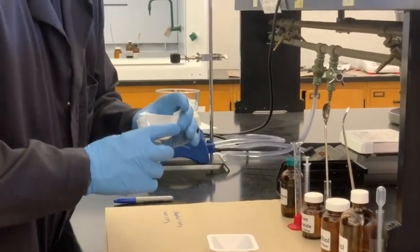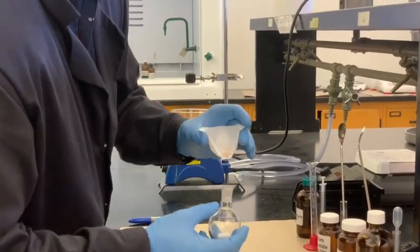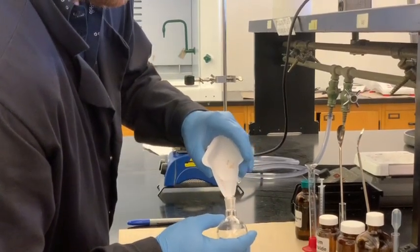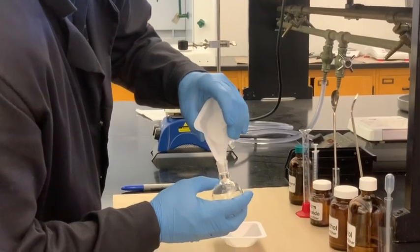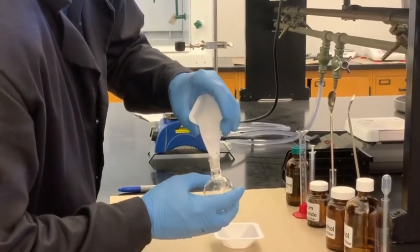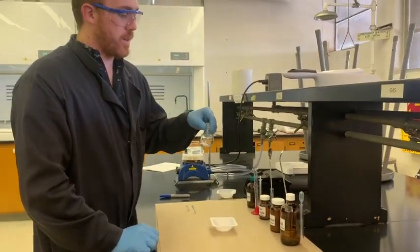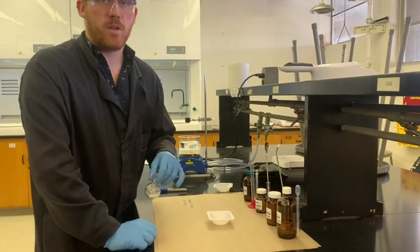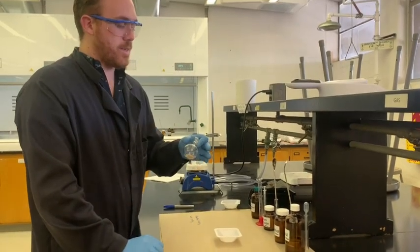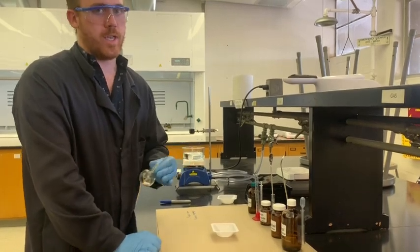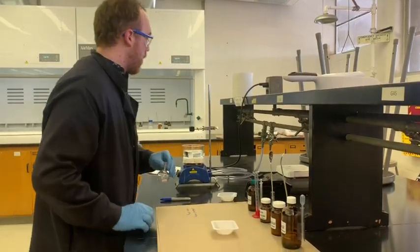So this is just 2-naphthol, it's got a couple of colored impurities in it. Want to get as much of it as you possibly can. We're not going to actually add the sodium hydroxide yet, just because it's not necessary. You want this 2-naphthol to really be fully dissolved before you actually add the sodium hydroxide.